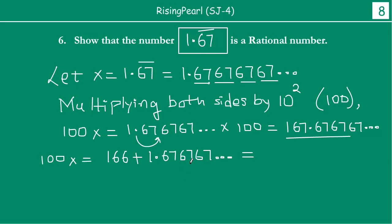So if we write 167.676767... in this form as 166 plus 1.676767..., 166 plus 1 is 167 point, the decimal numbers will be there, which is the same. Then we realize that this is our x. So this becomes 166 plus x.